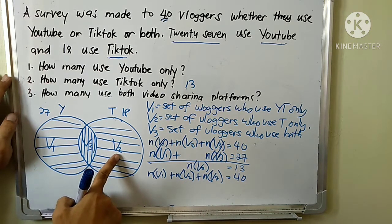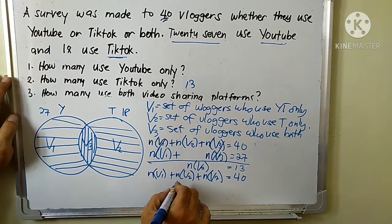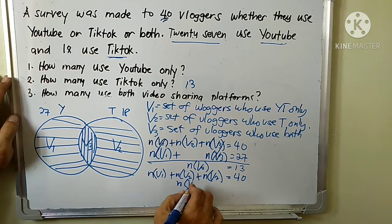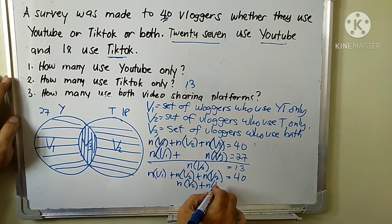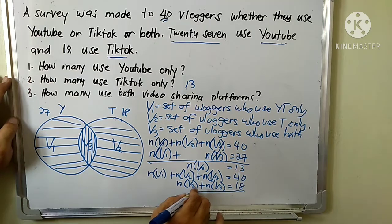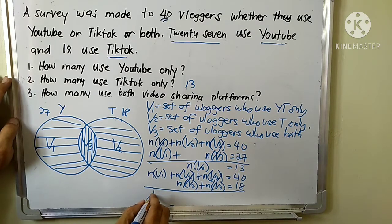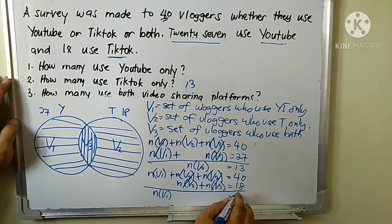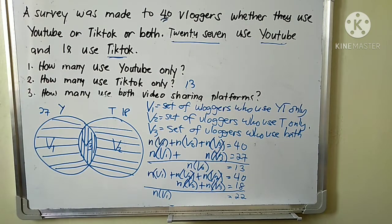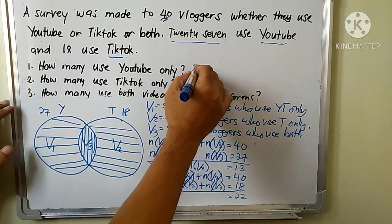Using the TikTok information — 18 used TikTok — we say the cardinality of v_sub2 plus the cardinality of v_sub3 equals 18. Subtracting this from the total equation, we cancel the corresponding terms and find the cardinality of v_sub1 equals 22. That is the number of vloggers who use YouTube only.